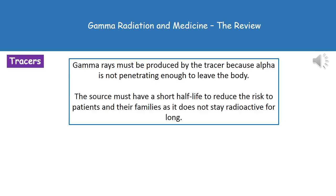Finally, we need to consider why we use gamma rays for tracers. The key thing is to do with the amount of penetration. Gamma rays are penetrating enough to cross from inside the body to the detector. However, if we were to use something like an alpha particle, it's not penetrating enough to leave the body — so there's no point in using alpha as a tracer, because it will never leave the body and therefore would never be picked up by our detector.